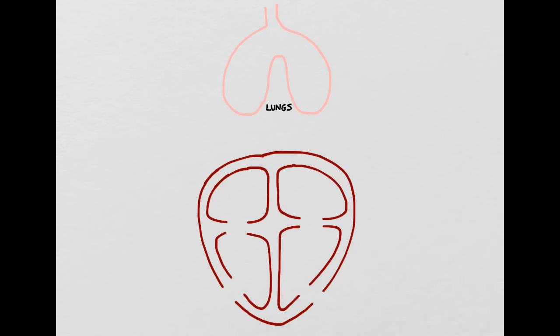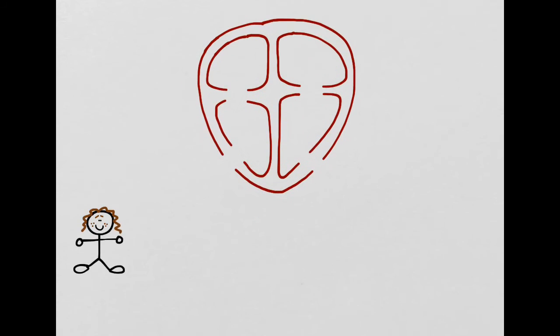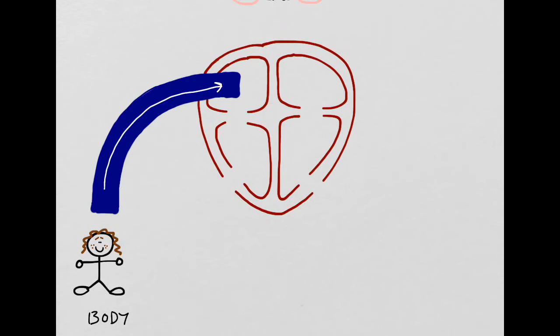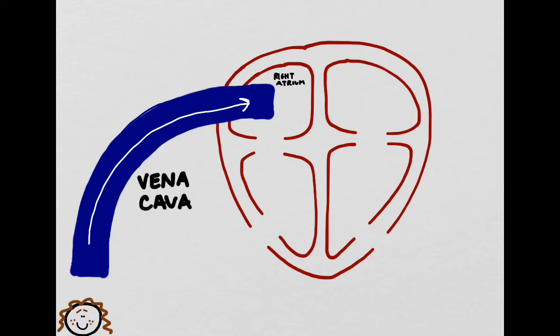We're going to start by diagramming the systemic and pulmonary loops simultaneously. We're going to start off by connecting the body and the heart. Down here I've drawn a little stick figure which is going to represent the body. First, we're going to connect the body to the heart using a blood vessel that we're going to draw in blue. This vein is called the vena cava, and you actually have two branches, one that comes from your head, shoulders, and neck, and one that comes from your entire lower body. This blood vessel brings deoxygenated blood into a chamber called the right atrium. Remember that whenever we're talking about a bodily structure, we always refer to the patient's left or the patient's right.